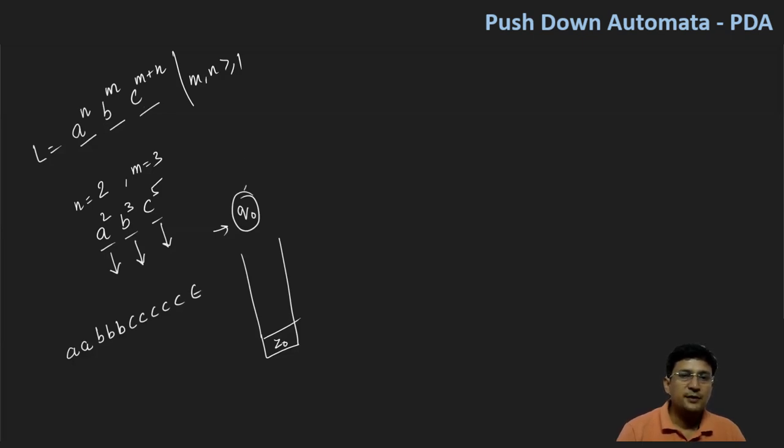So we get A, and if we see Z0, then I will push this symbol. Similarly, if you have B, then I will push A.